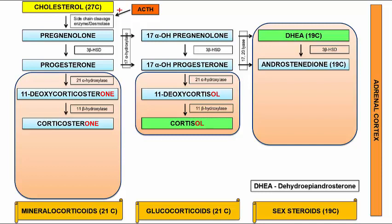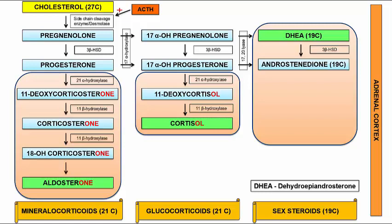The glucocorticoid pathway ends with cortisol, also called hydrocortisone, which is the main glucocorticoid synthesized in the body. Continuing with the mineralocorticoid pathway, corticosterone is converted to 18-hydroxycorticosterone, which is then converted to aldosterone. Both these reactions are catalyzed by 11-beta hydroxylase; the last step is also called aldosterone synthase and is stimulated by angiotensin II.